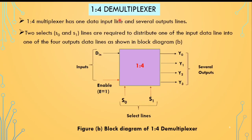For the 1 by 4 demultiplexer, there is one data input line and several output lines. Two select lines, s0 and s1, are required to distribute the input data line into one of four output data lines, as shown in the block diagram. The demultiplexer has only one input and that input is distributed to one of the four output data lines with the help of the select lines.